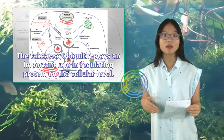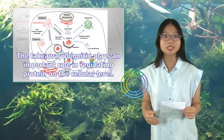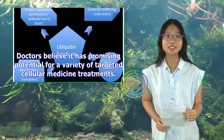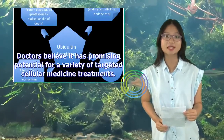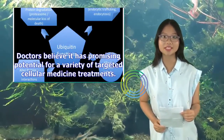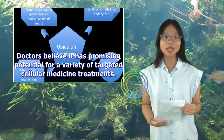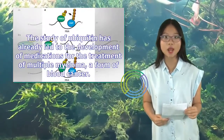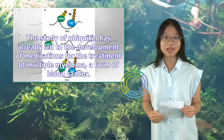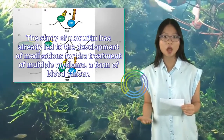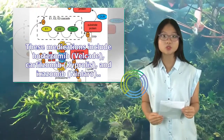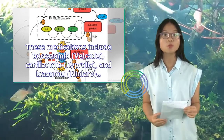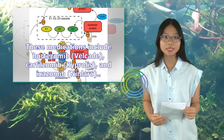The takeaway: ubiquitin plays an important role in regulating proteins on the cellular level. Doctors believe it has promising potential for a variety of targeted cellular medicine treatments. The study of ubiquitin has already led to the development of medications for the treatment of multiple myeloma, a form of blood cancer. These medications include Bortezomib (Velcade), Carfilzomib (Kyprolis), and Ixazomib (Ninlaro).